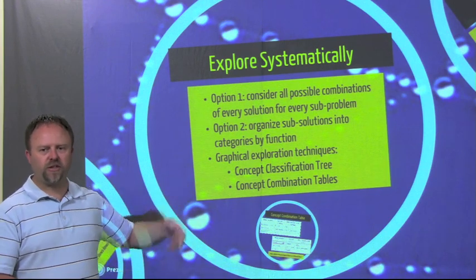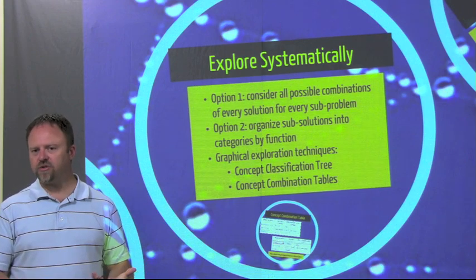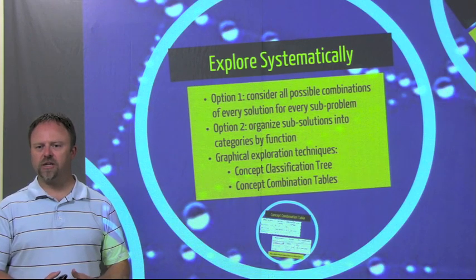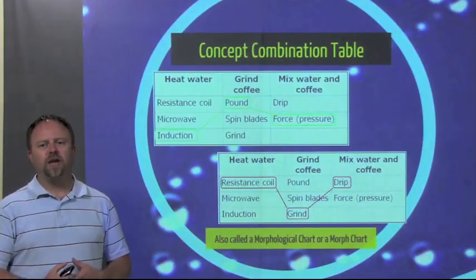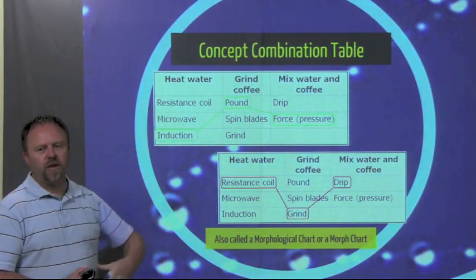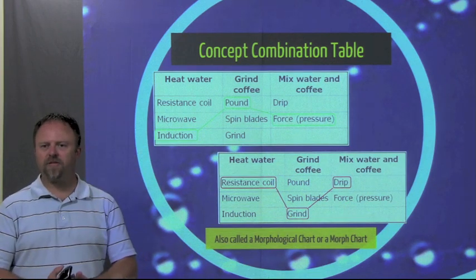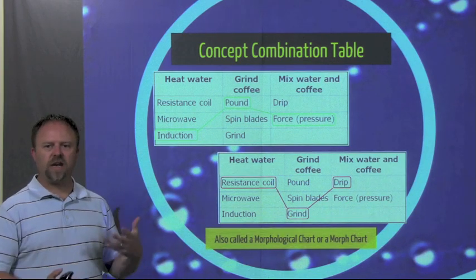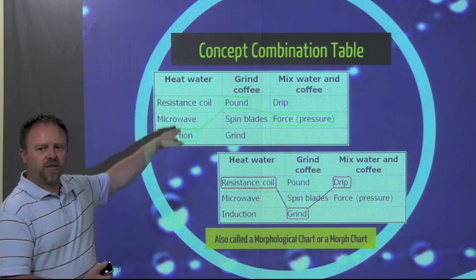And we can do that. Sometimes it's helpful to graphically show those through maybe a concept classification tree or a concept combination table. I'll show you an example of the tables - we'll be using these. We'll look at the top one as our example. So this is for an automatic coffee maker where it grinds the coffee and makes it all together.